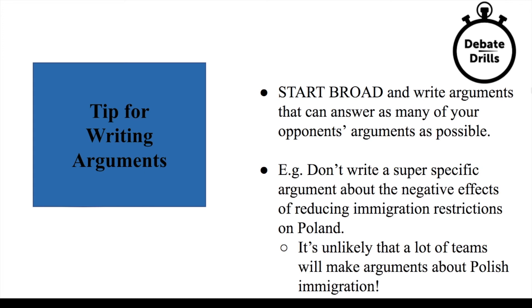Here's a key tip: make sure to start broad and write arguments that can answer as many of your opponent's arguments as possible. For example, you wouldn't want to write a super specific argument about the negative effects of reducing immigration restrictions on Poland, because it's unlikely that many teams will make arguments about Polish immigration specifically. Teams are going to make arguments about immigration from a ton of different countries, so you want to find arguments about immigration from any country rather than just focusing on one specific country.